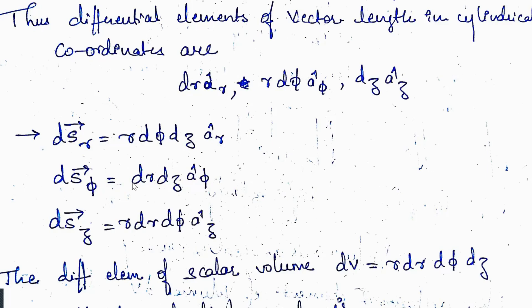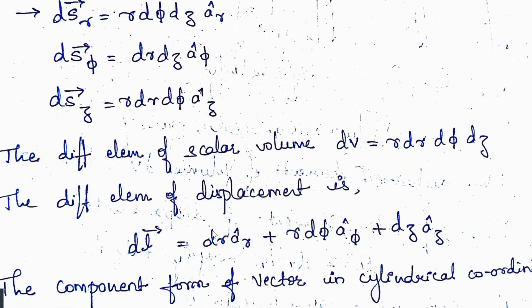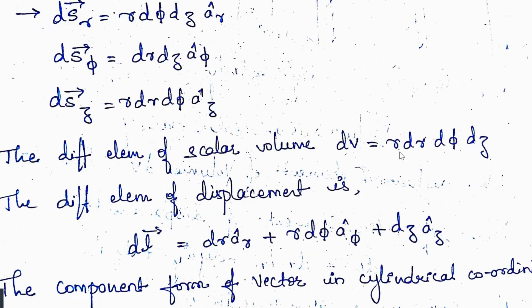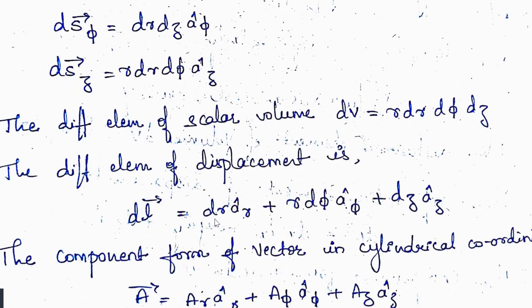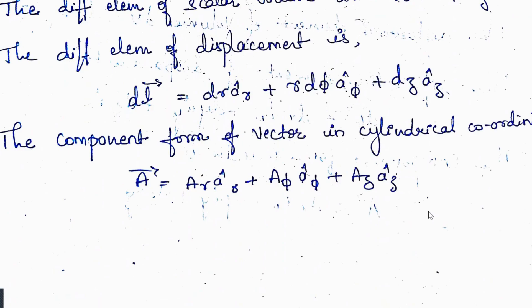For the cylindrical system: dSφ = dr·dz·âφ, and dSz = r·dr·dφ·âz. The differential element of volume is dv = r·dr·dφ·dz. The differential element of displacement is: dl = dr·âr + r·dφ·âφ + dz·âz. The component vector has the same form as Cartesian but with coordinates r, φ, z. Capital A's are constants and small â's are unit vectors.